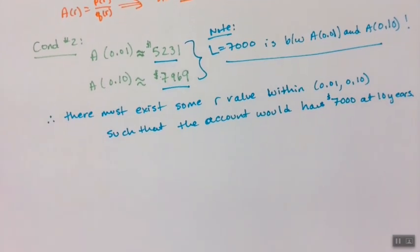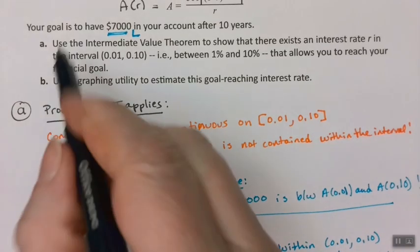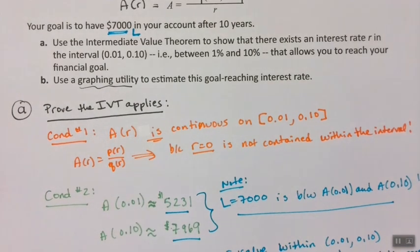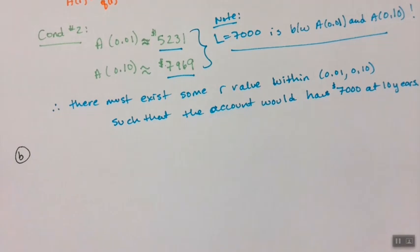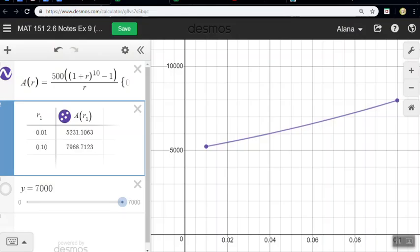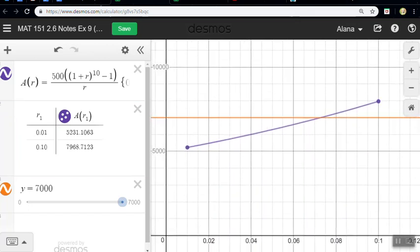Now we actually have to find that interest rate, and they're telling us to use a graphing utility — a calculator or Desmos. So I'm going to use Desmos. There's my function, and I graph my other function, which is y = $7,000. Then I click to find the intersection.